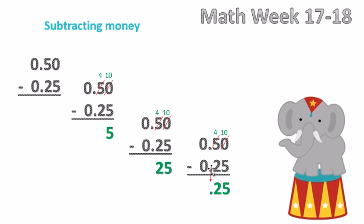is to bring our decimal down from here to here. So 50 cents minus 25 cents is 25 cents.